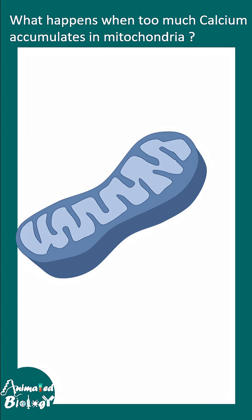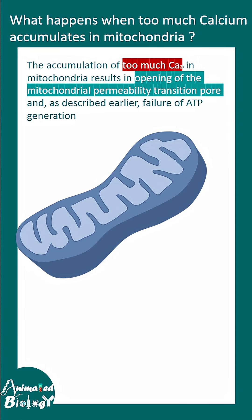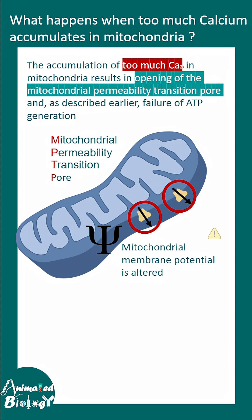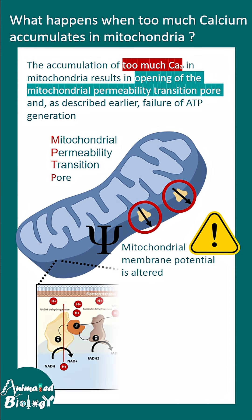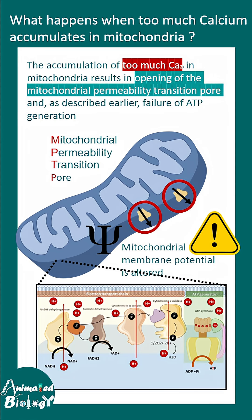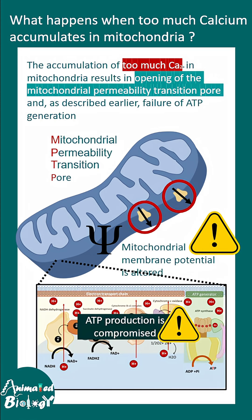Even if there is a high concentration in mitochondria, too much calcium can lead to opening of the mitochondrial permeability transition pores, or MPTPs, leading to calcium outflux and a change in membrane potential. This membrane potential of the mitochondria is super important for ATP generation via the electron transport chain, so if this potential is altered, ATP production would be hampered.